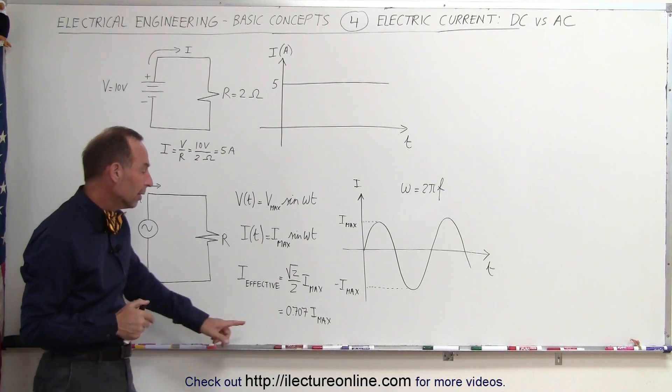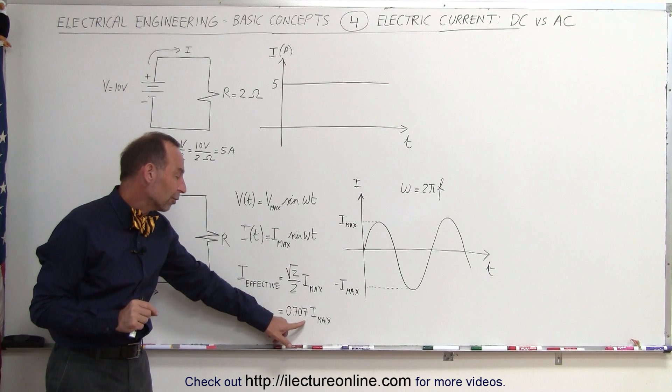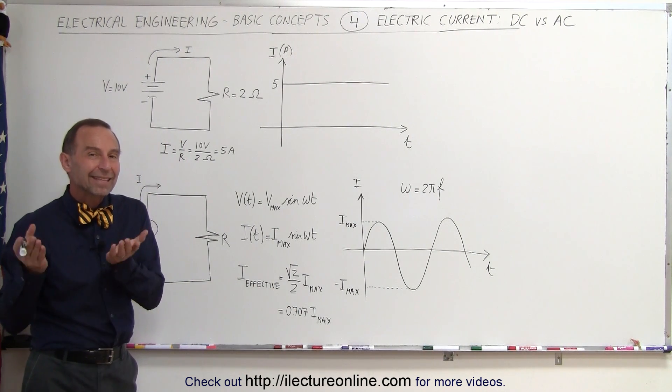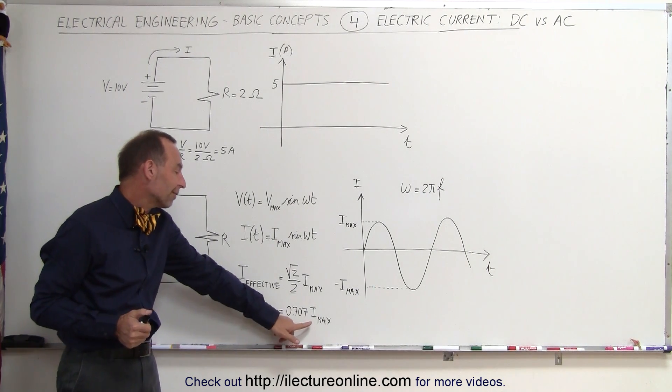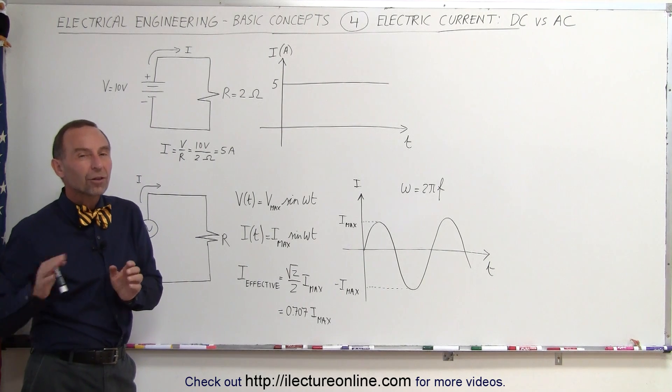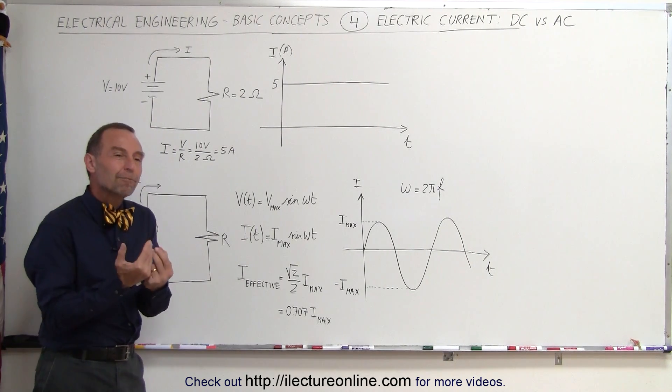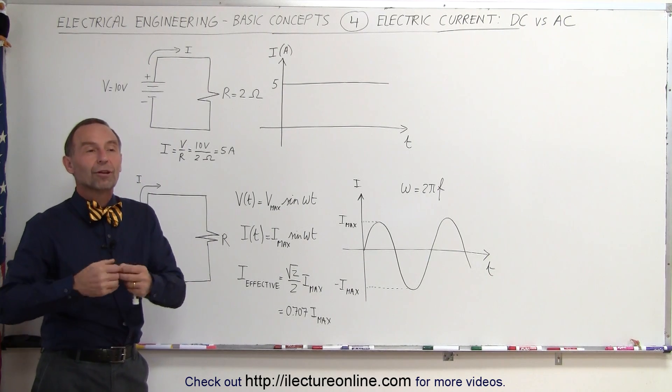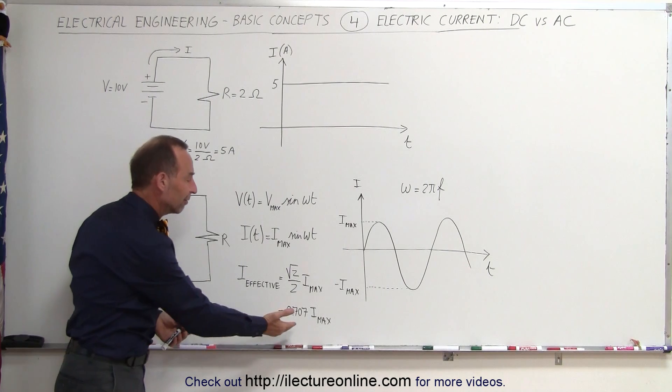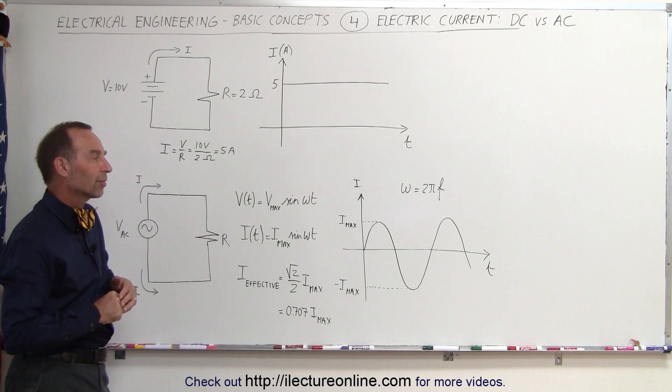But what that means is that the effective current is 0.707 times I max. In other words, if you want to replace it by a DC equivalent current, it would be 0.707 times I max of the alternating current. So alternating current, even though it's flowing in opposite directions, gives you the impression that the components in the circuit feel as if current is being pushed in one direction only, and the effective value of the current would be 0.707 times I max.